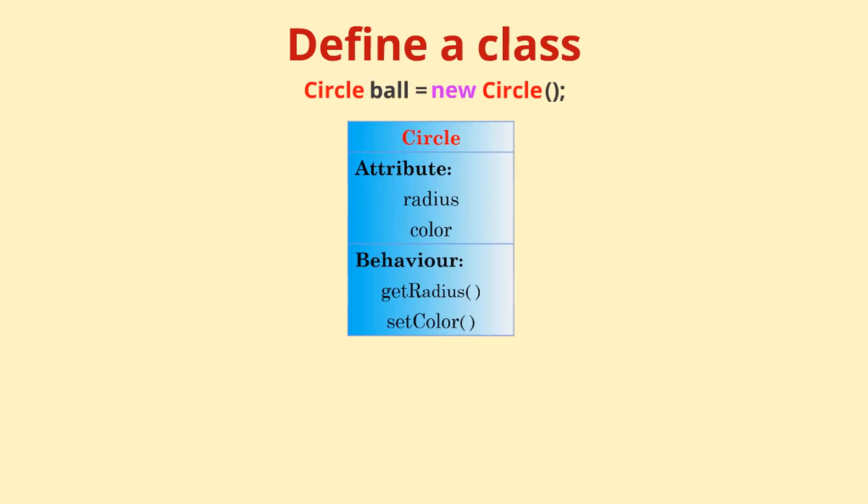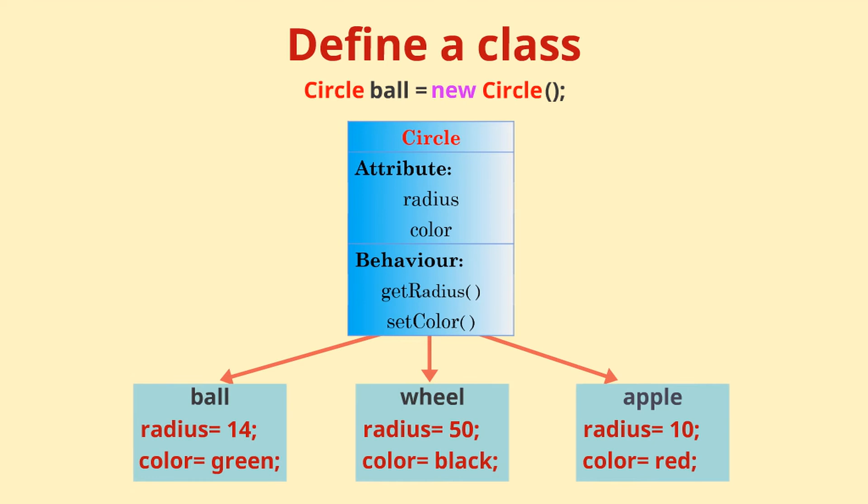Now objects are an instance of a class or variables of type class. You create an object by specifying the class name and then giving the object names which actually allocates memory for them. The data is also referred to as class variables, instance variables, or state.